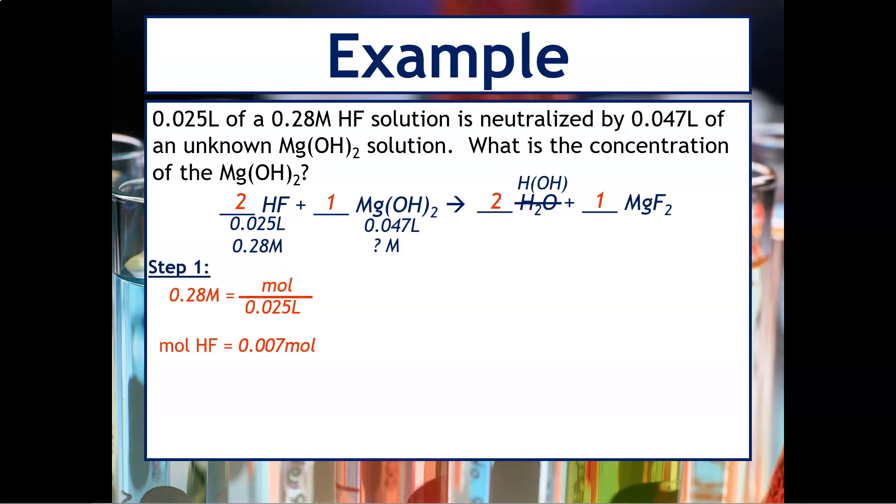The next step is to figure out how much magnesium hydroxide is going to be reacting with that. So to do that, we need our stoichiometry. So notice that it is in a two to one ratio. So we're going to say for 0.007 moles of HF, there are two moles of HF for every one mole of magnesium hydroxide. So I'm going to essentially divide that by two and you should get that 0.0035 moles of magnesium hydroxide is what is required to react with the hydrofluoric acid.